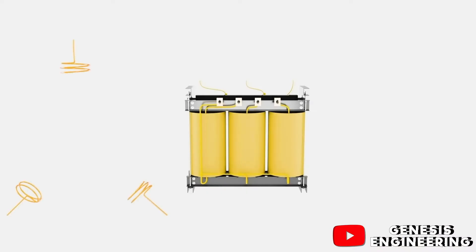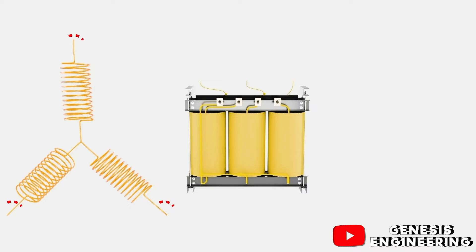In the secondary coil we have the star configuration with four connection points and we can observe that in the common point, which is the connection of the three coils, we have the place where the neutral is generated.